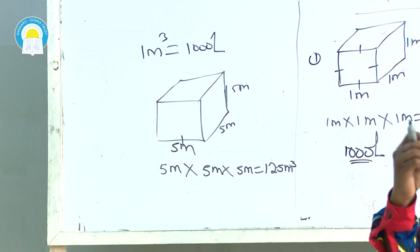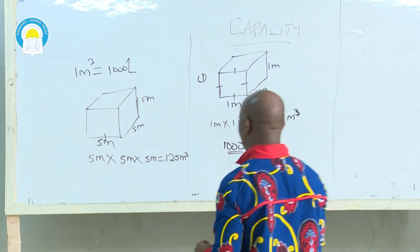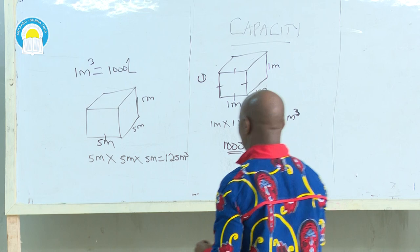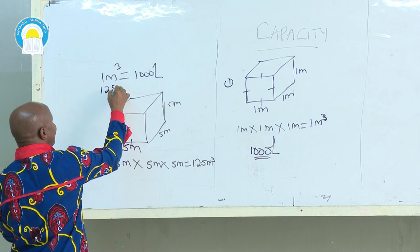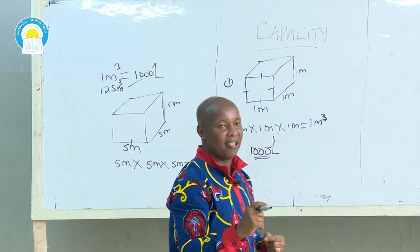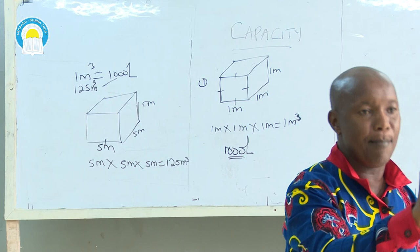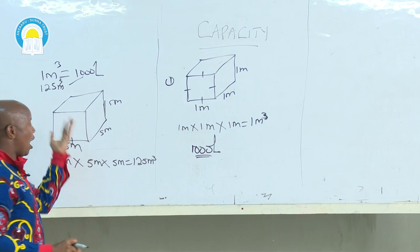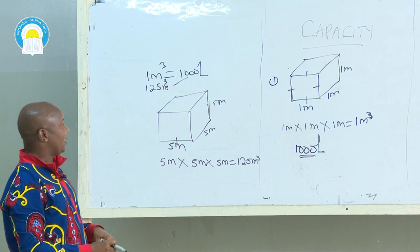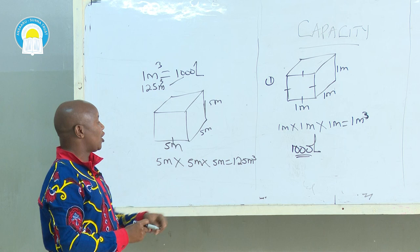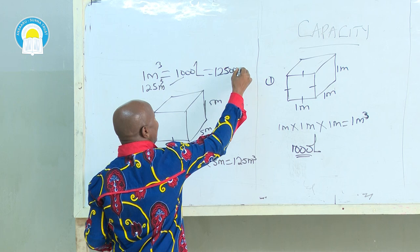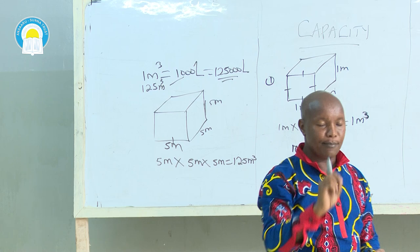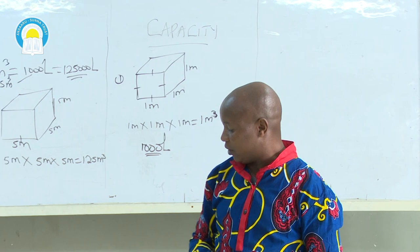That is the volume. Now, what is the capacity of the container? We convert 125 cubic meters into liters. I said 1 cubic meter is equivalent to 1,000 liters. So what about 125 cubic meters? You cross multiply. To convert cubic meters to liters, always multiply by 1,000. Our capacity is 125 × 1,000, which equals 125,000 liters. To convert meters cubed to liters, always multiply by 1,000.